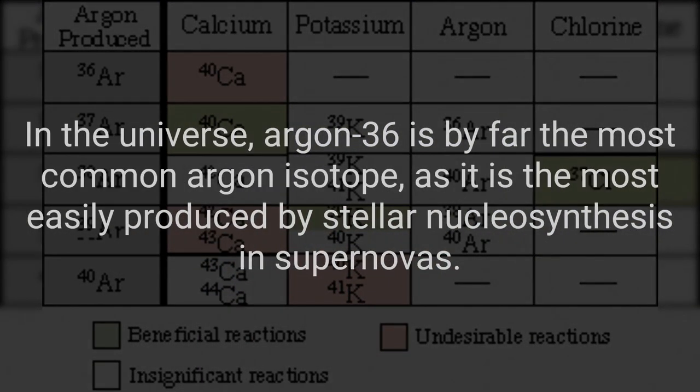In the universe, argon-36 is by far the most common argon isotope, as it is the most easily produced by stellar nucleosynthesis in supernovas.